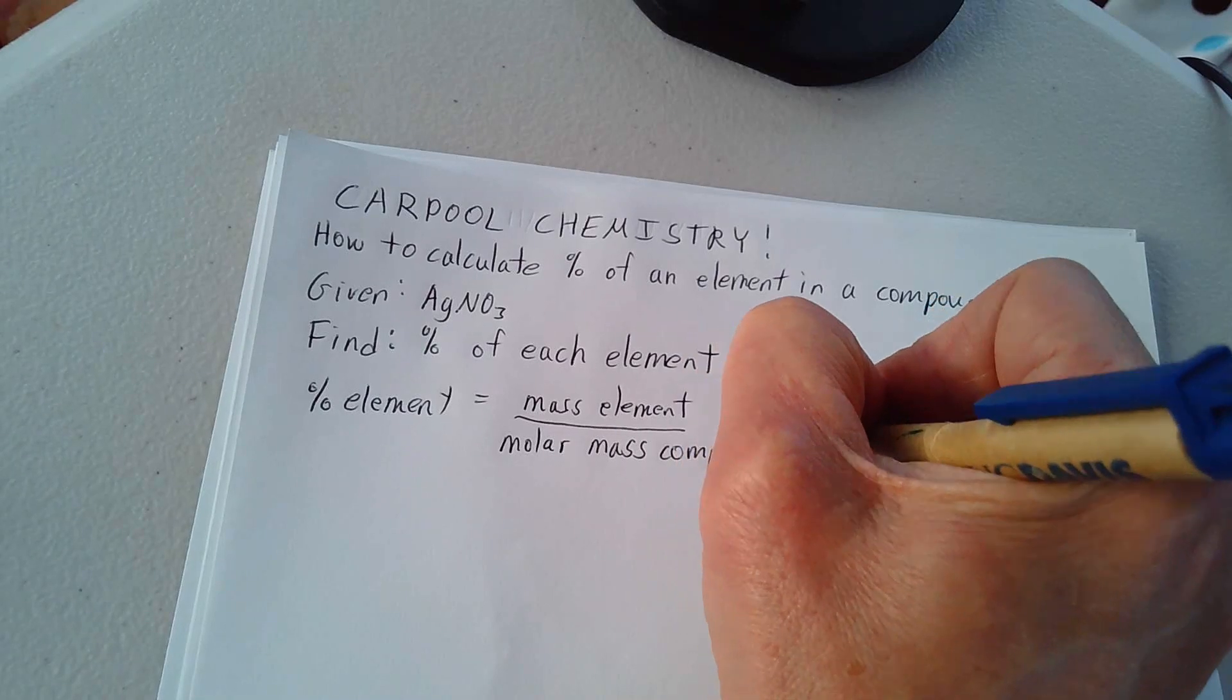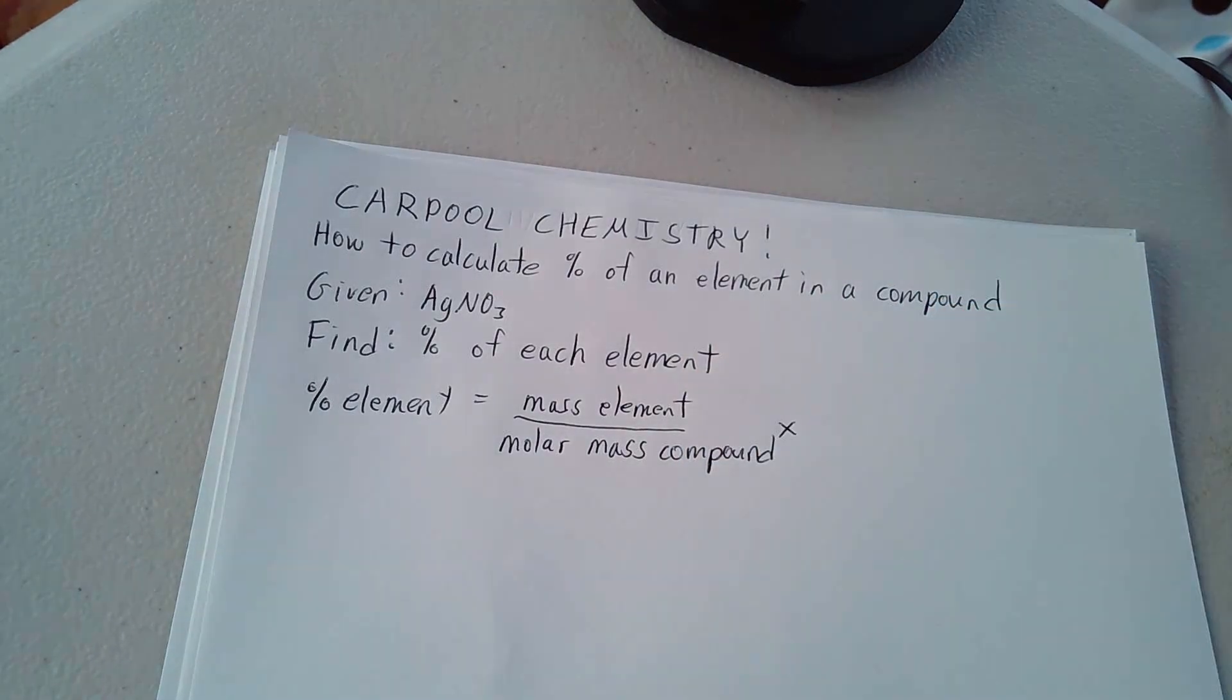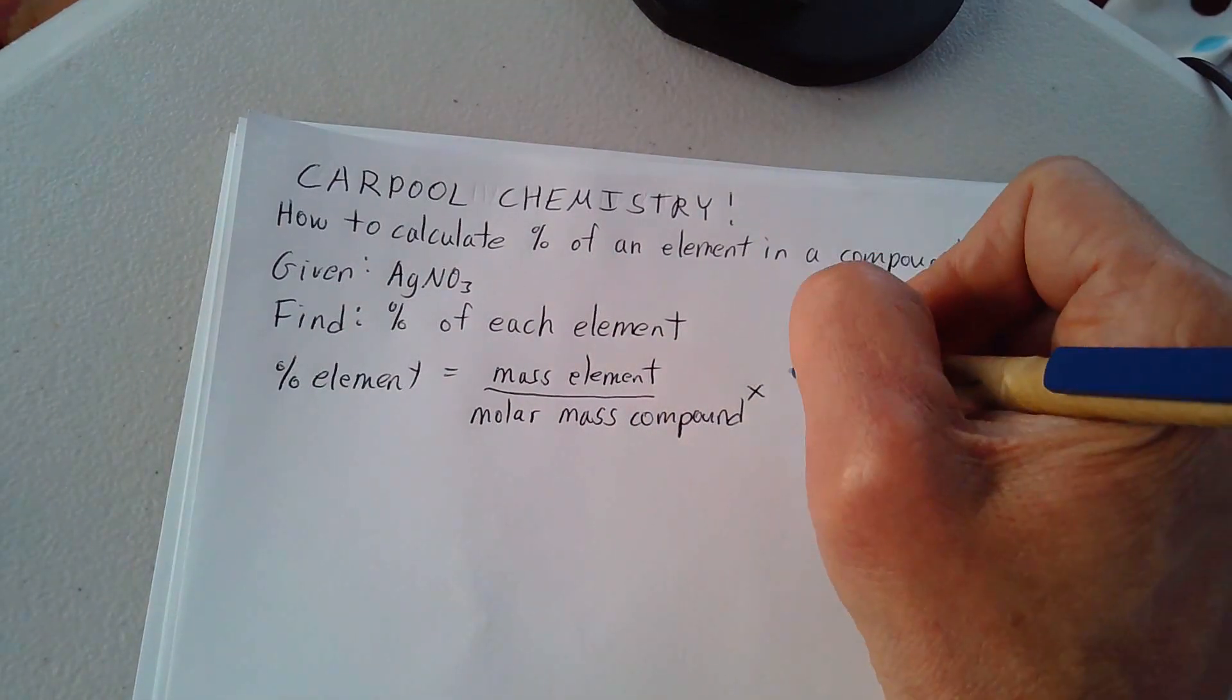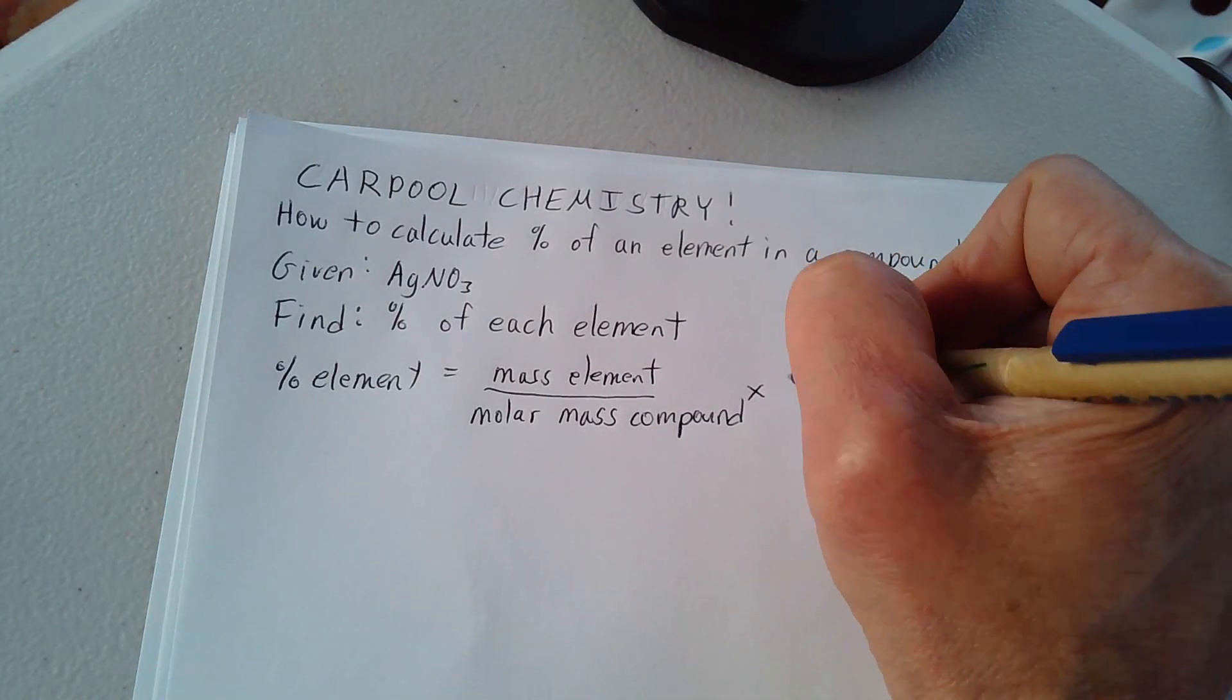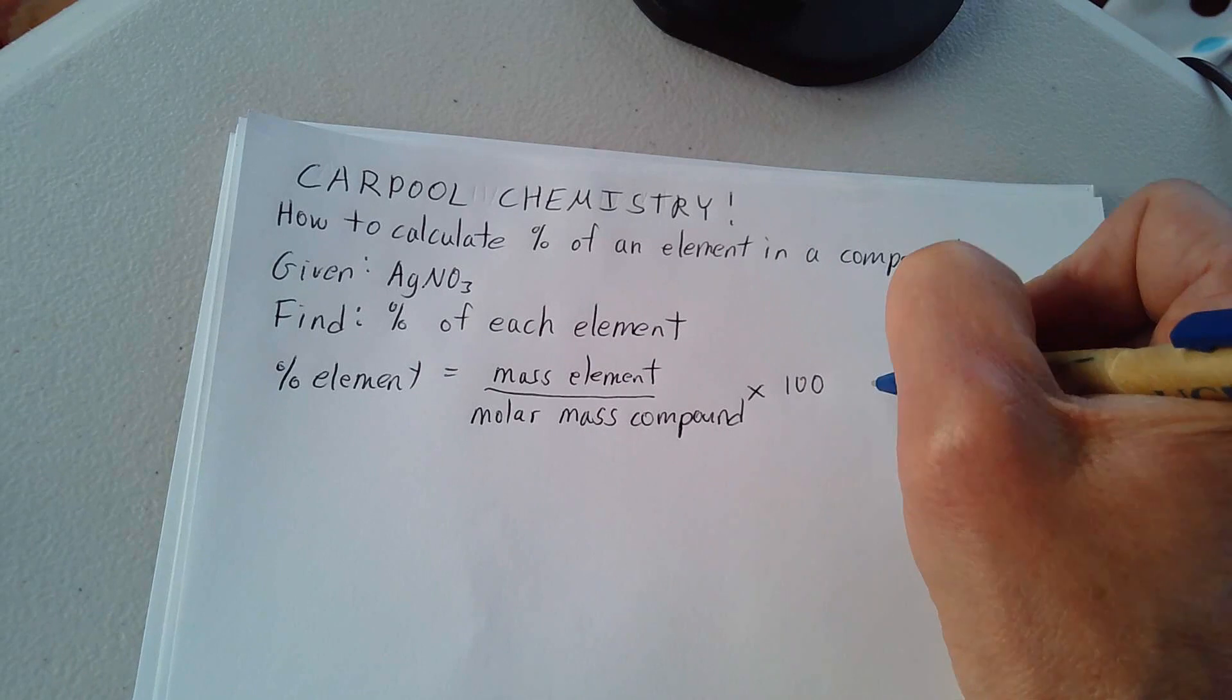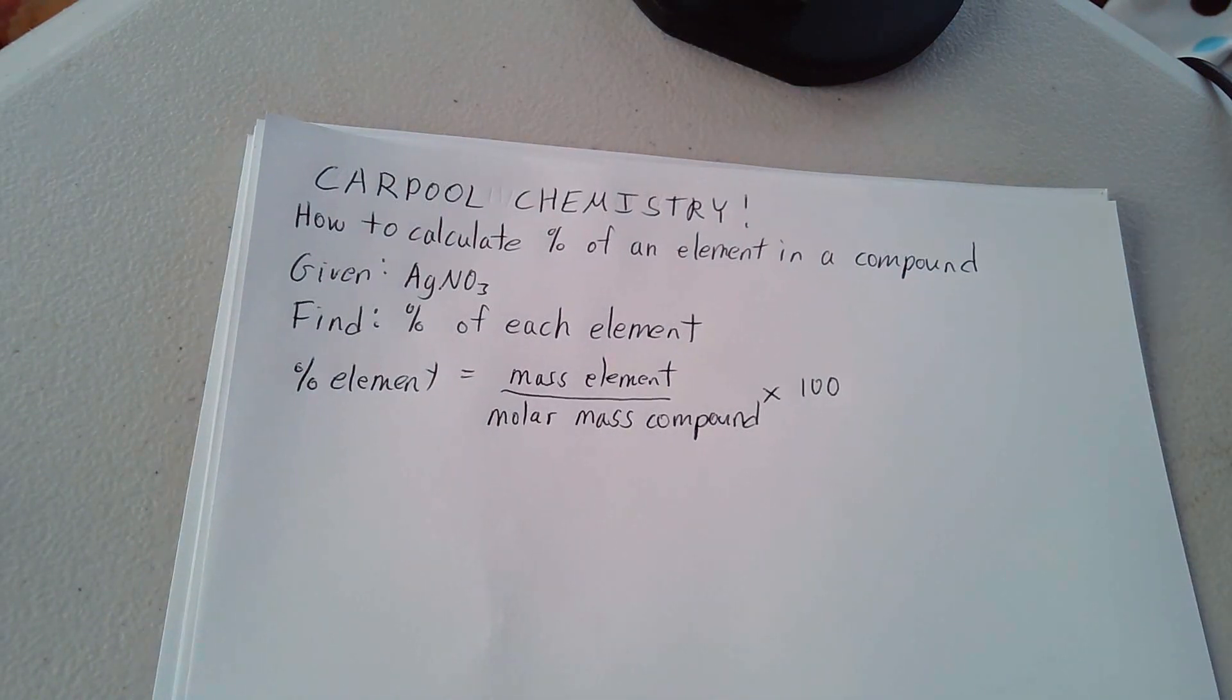And then if you divide it, it gives you a ratio or a fraction. And you could divide it and have a decimal number, and to convert that to percentage, of course, you multiply by 100.